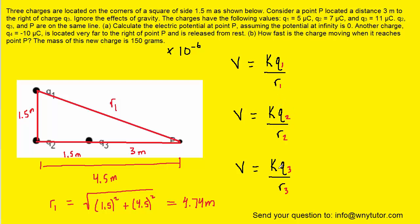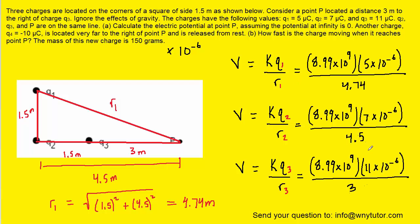We can fill in all the charges as well as all the distances. Notice that Q2 has a distance of 4.5 meters to point P, as noted earlier. And Q3 has a distance of just 3 meters. So let's plug in all the known values. All of the known values are plugged in. Notice that K is 8.99 times 10 to the 9th. Also remember that we converted the charges from microcoulombs into coulombs by multiplying by 10 to the minus 6, and then we plugged in the respective distances.